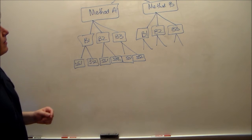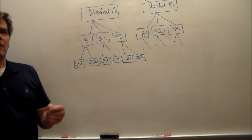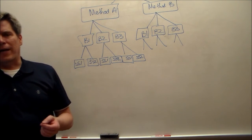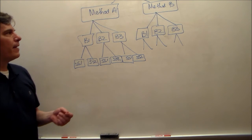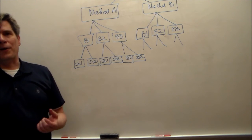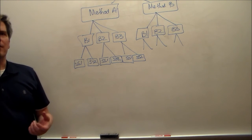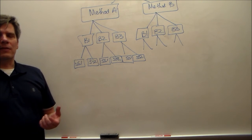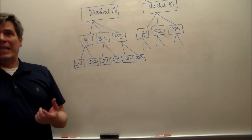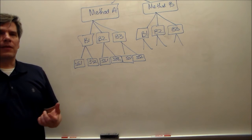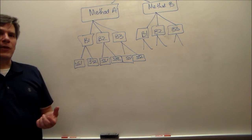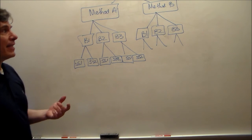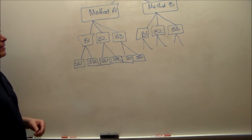Nesting, subsampling, hierarchical models — they all speak about the same thing. It's the lack of crossover. Because of that lack of crossover, the degrees of freedom are going to be different; therefore, the sums of squares will be different, and the F statistics will be different. Just about everything will be different.